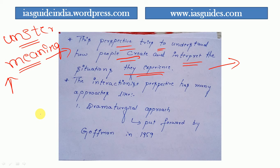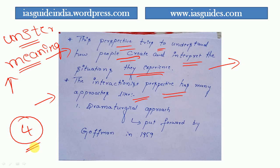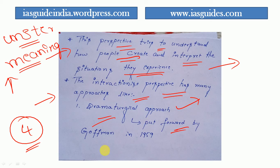The interaction perspective has four approaches within it. The first approach is known as the dramaturgical approach, put forward by Goffman in the year 1959.